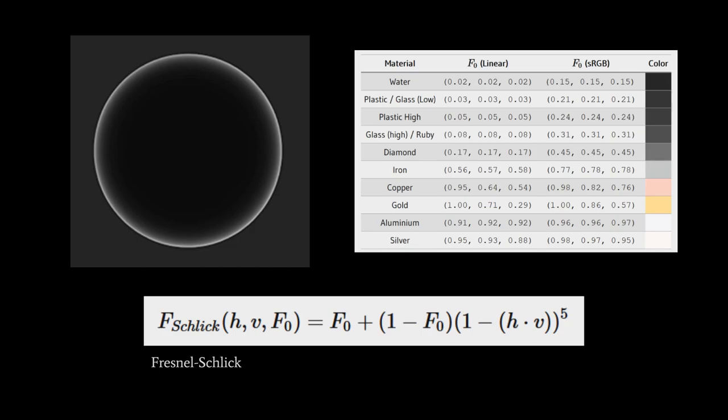As for F sub zero, let's consider first, say, water, for which again, the F sub zero value is 0.02, 0.02, 0.02. Well, one minus a very small value gets us a value close to one.